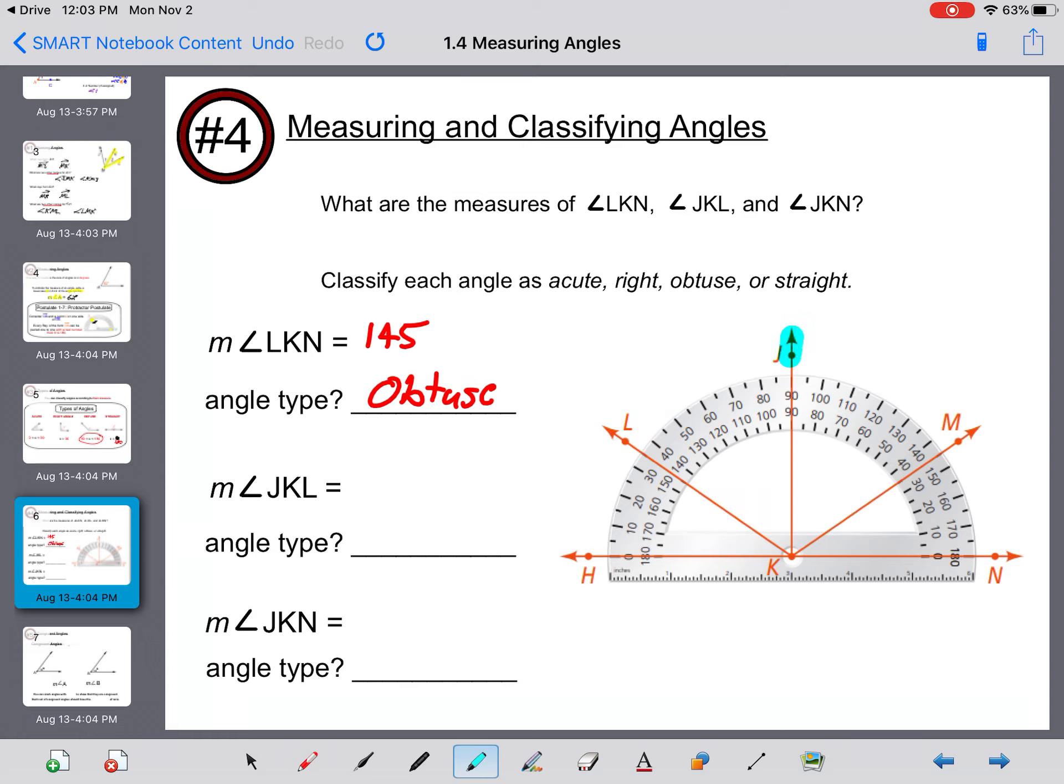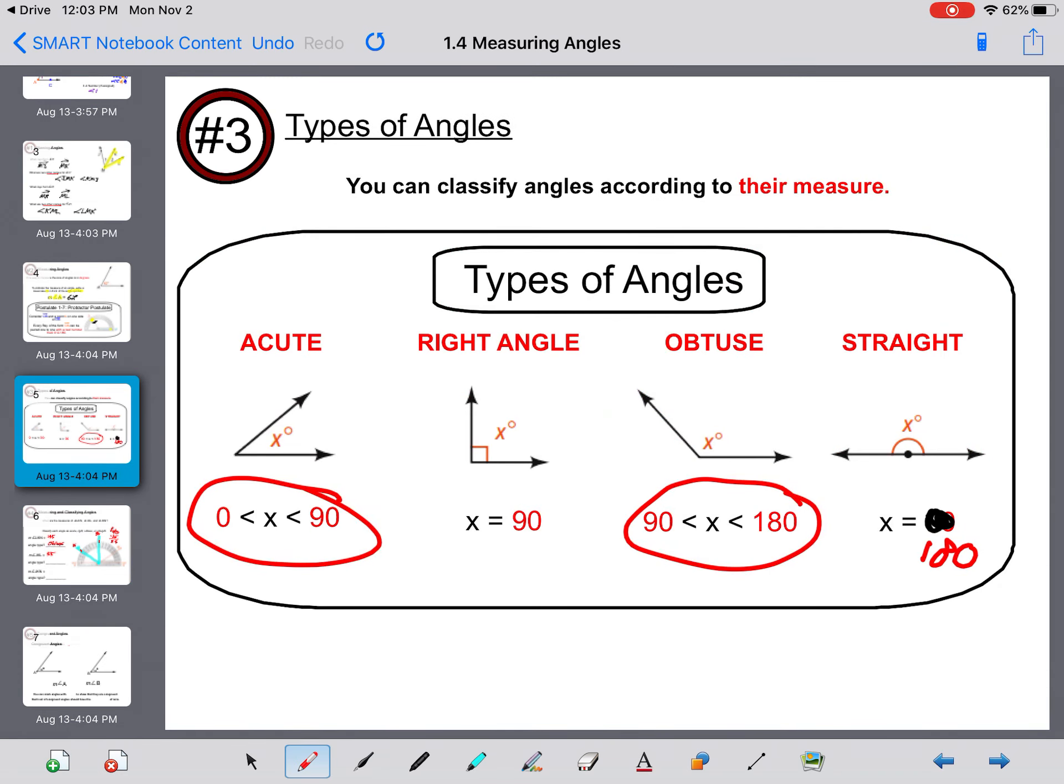The measure of angle JKL. If you notice, we're not starting at zero this time. We're starting right here at 35 and finishing at 90. So in order to find the distance between 90 and 35, we do 90 minus 35. It's 55 degrees. The angle type, if it's 55 degrees, would be between zero and 90, so acute.